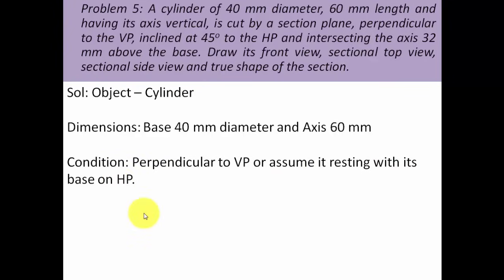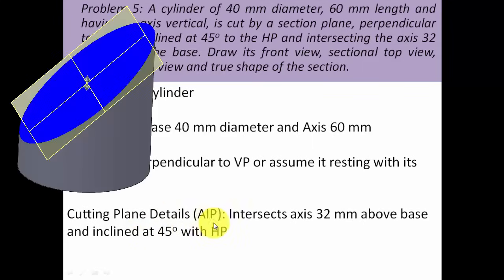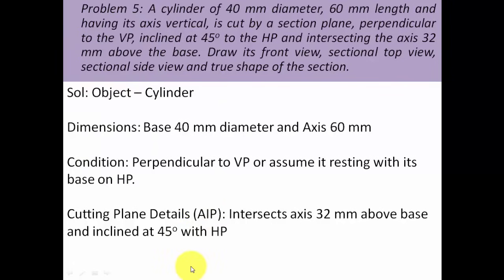Let's write down the details associated with the cutting plane. It's an auxiliary inclined plane — this sort of plane, AIP, is inclined to the horizontal plane and at the same time perpendicular to the VP. It is intersecting the axis 32 mm above the base, while maintaining an angle of 45 degrees. We're going to make sure that all these details appear perfectly in our drawing.